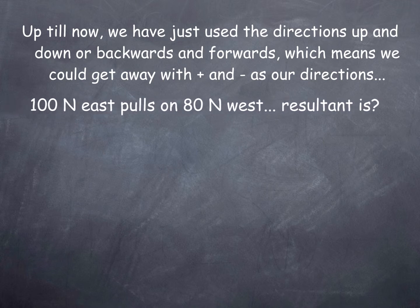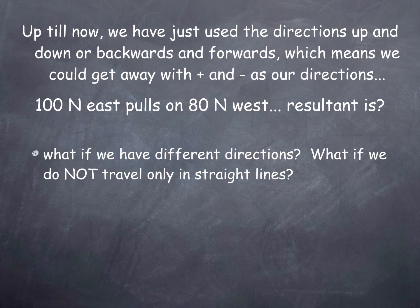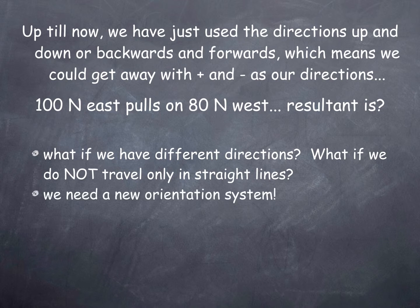We had problems like somebody pulling me 100 newtons east and somebody else pulling me 80 newtons west. The resultant here, east is going to beat west by 20, so the answer would be 20 to the east. But what if I'm not going in a straight line? What if we have different directions and we're going all over the place? In that case we need a new orientation system — we can't get away with just plus and minus.